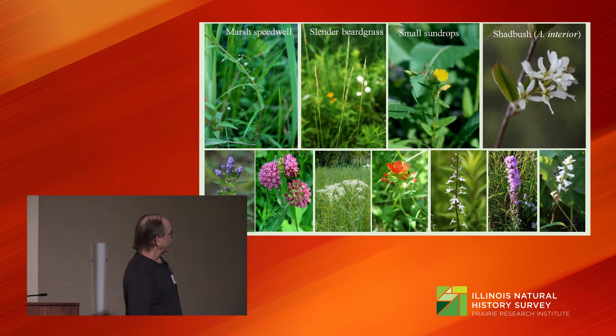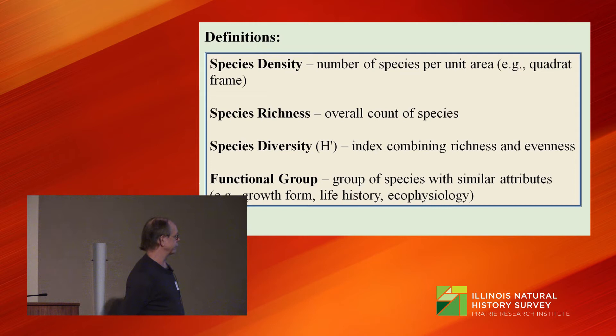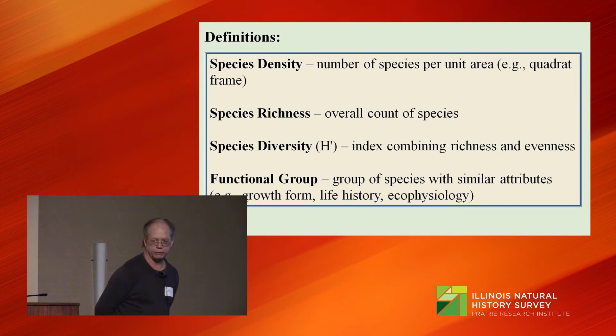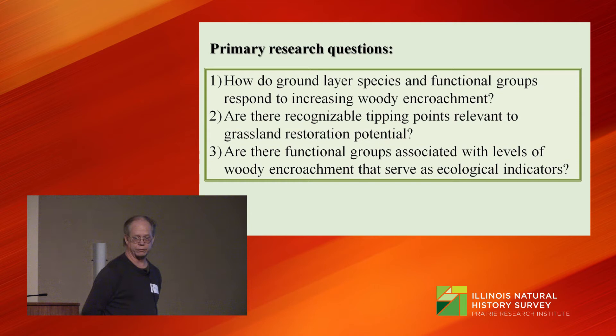Some useful definitions: species density is number of species per unit area, such as a quadrat; richness is an overall count of species; diversity is an index combining richness and evenness; and functional groups are groups of species with similar attributes, like growth form, life history, and ecophysiology. Research questions: how do ground layer species and functional groups respond to increasing woody encroachment? Are there recognizable tipping points relevant to restoration potential? And are there functional groups associated with levels of woody encroachment that serve as ecological indicators?